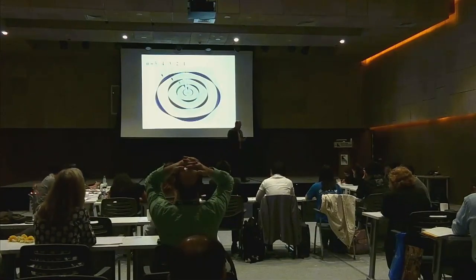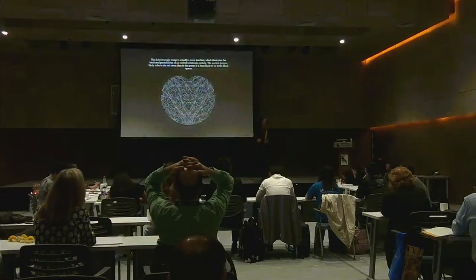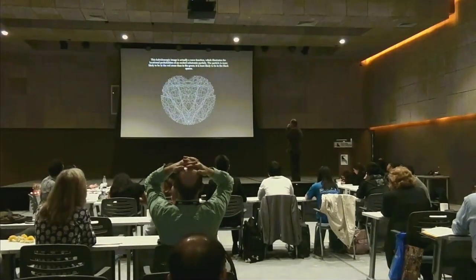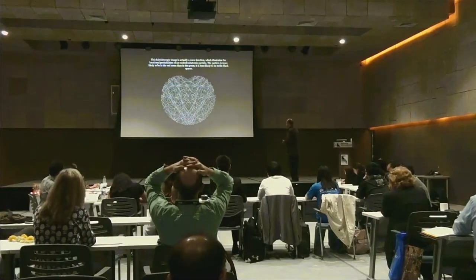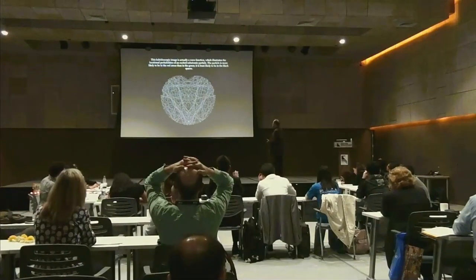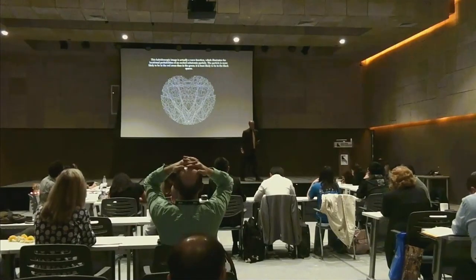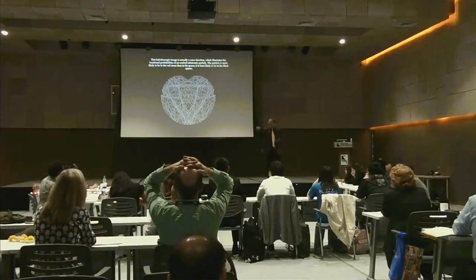Some places they're more likely to be in, some places less likely, but there's no place that they actually are. In fact, this kaleidoscope image is actually a wave function which illustrates the locational probabilities of an excited subatomic particle. An electron is more likely to be in the red areas, least likely in the black spaces — it could be any of those places, but isn't in any of them until... until you look at it.